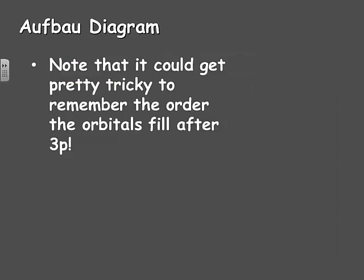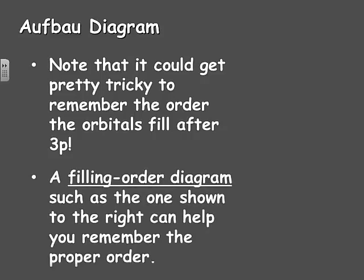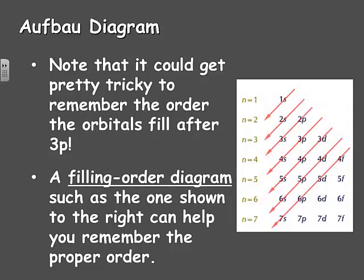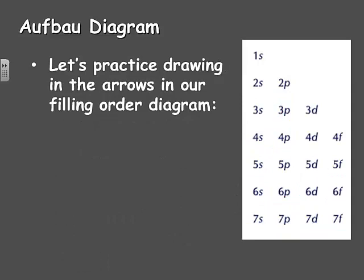It can get tricky to remember the order of the orbitals after 3P, since it jumps to 4S before 3D. There is a way to quickly draw a diagram to help remember the order — it's called a filling order diagram. You start on one line and write 1S, then on the next line write 2S and 2P, the third line has 3S, 3P, 3D, and continue through the seventh energy level. Then you draw diagonal arrows from right to left. Following those arrows in sequence tells you exactly what order electrons will fill those sublevels. Let's practice drawing in the arrows in our filling order diagram.